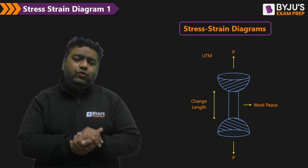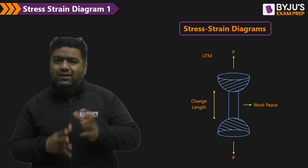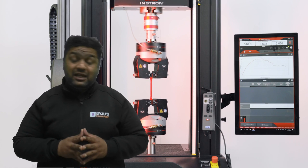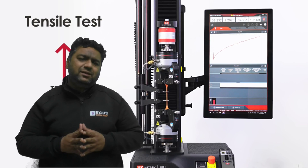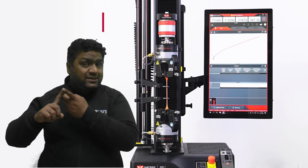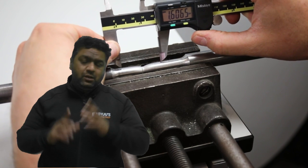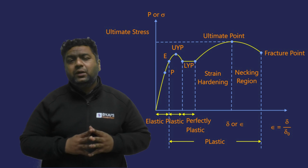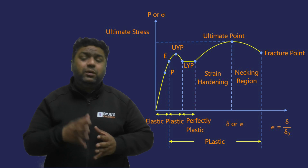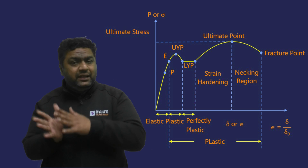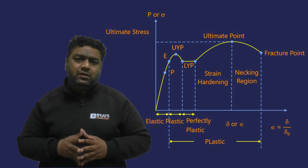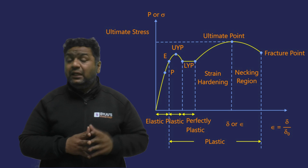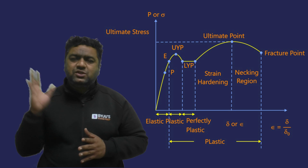Under ASTM guidelines, a dog-bone shaped specimen is taken and held between the jaws of a Universal Testing Machine, and then tensile forces are applied. There is also a compression test, shear test, and torsion test, but right now we are discussing the tension test. The problem with the load-deformation diagram is that it will change if the area or dimensions of the specimen change, so testing different specimens gives different diagrams. To avoid this dependency on shape and size, we use the stress-strain diagram.